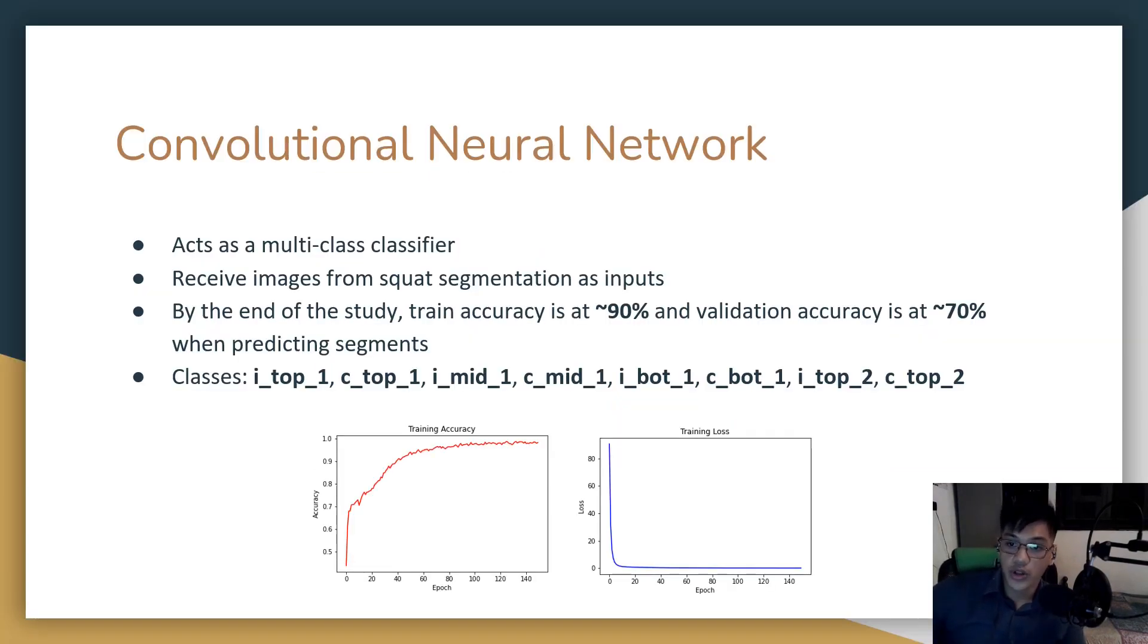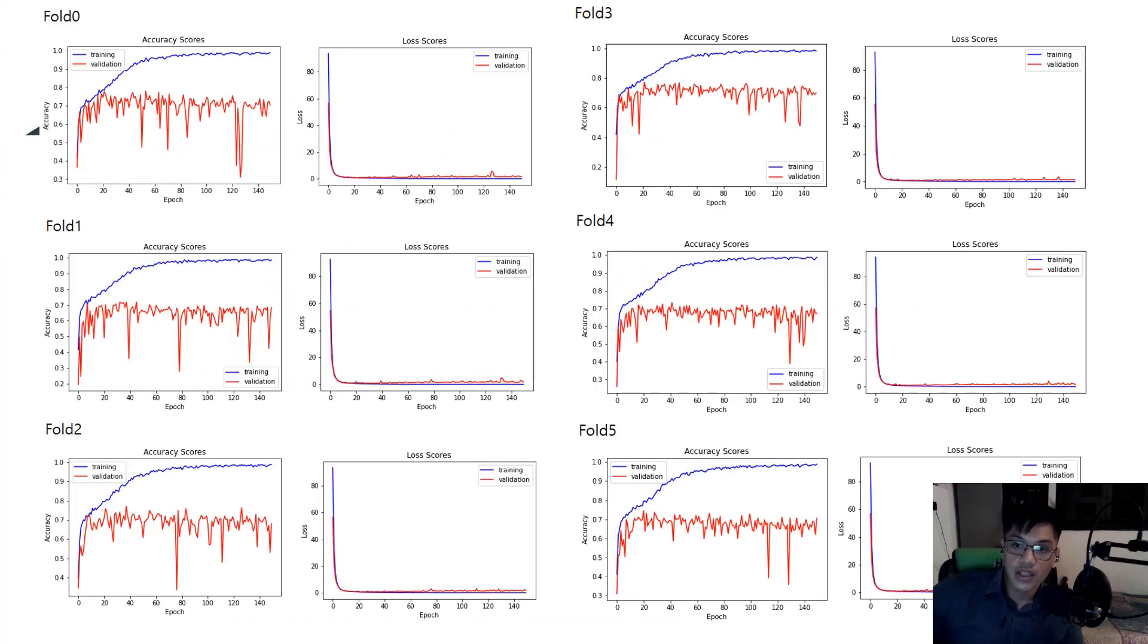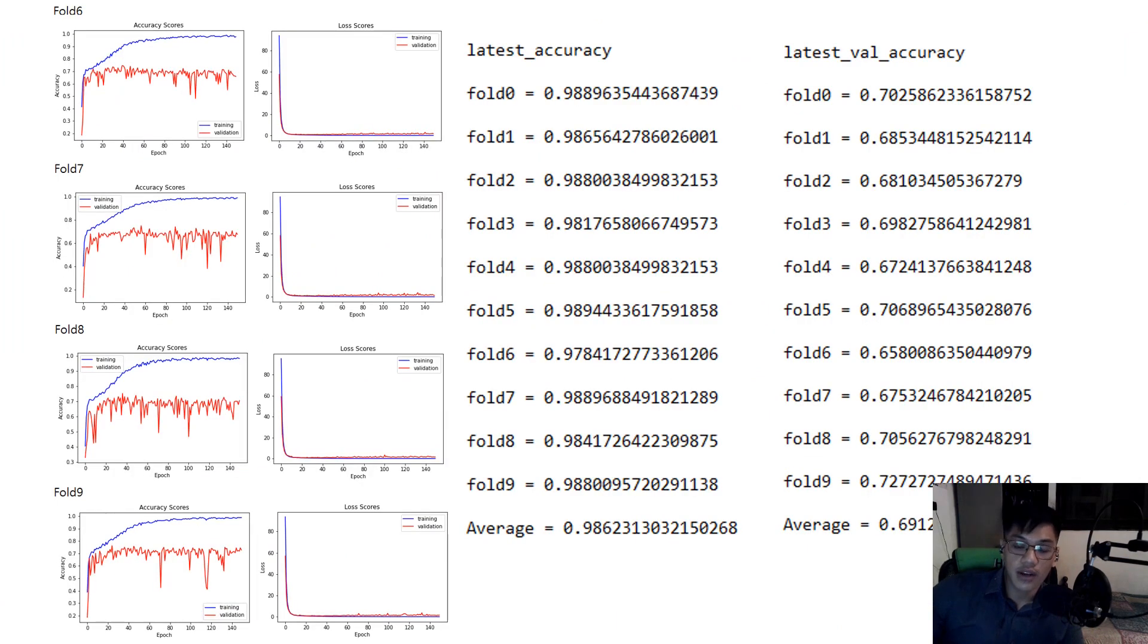In the system, we used a convolutional neural network. The CNN acts as a multi-class classifier. The model receives images from the squat segmentation module as input. By the end of the study, the train accuracy is at around approximately 90%, and the validation accuracy is at around 70% when predicting segments. We have eight classes. To validate this model, we use K10 fold cross-validation. These are the graphs of each fold from fold 0 to fold 5, and from fold 6 to fold 9. As we can see, the accuracy on seen data is at around 90% and around 70% on unseen data, so we expect its true accuracy between these two figures.